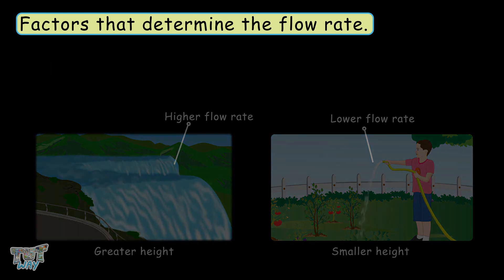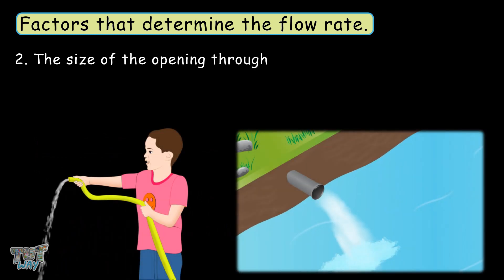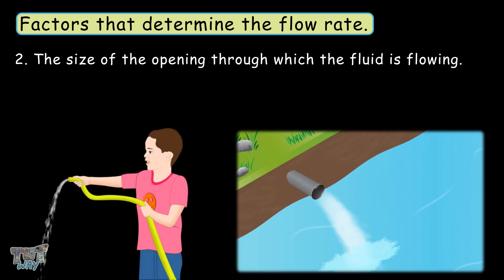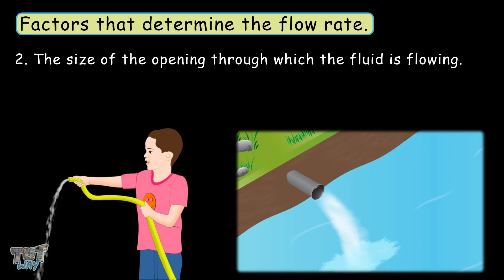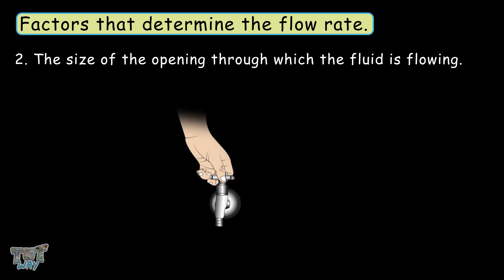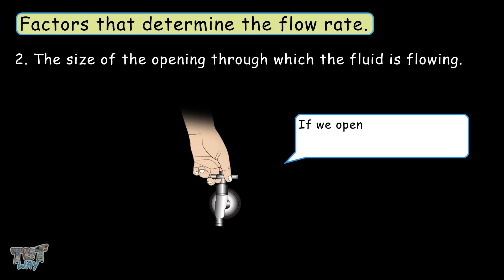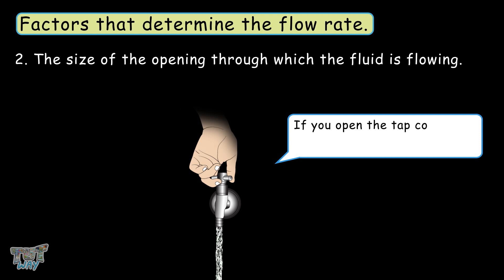The second factor is the size of the opening through which the fluid is flowing. The larger the opening of the pipe, tap, or container, the higher the flow rate. Flow rate of water coming through a tap depends on how much we open the tap. If we open the tap halfway, flow rate is slower. If you open the tap completely, the flow rate will be larger.